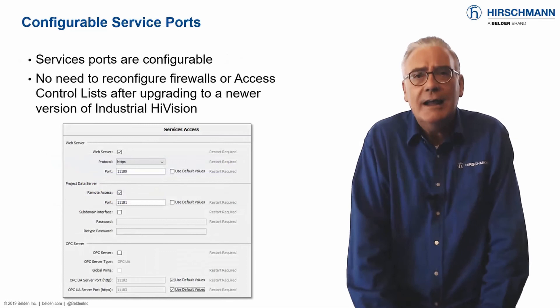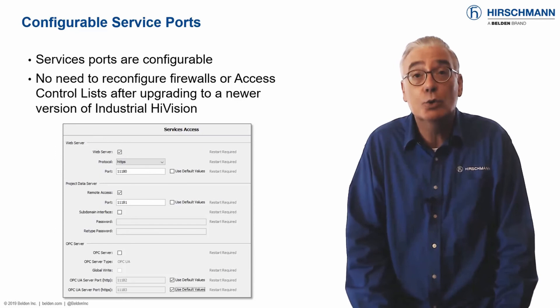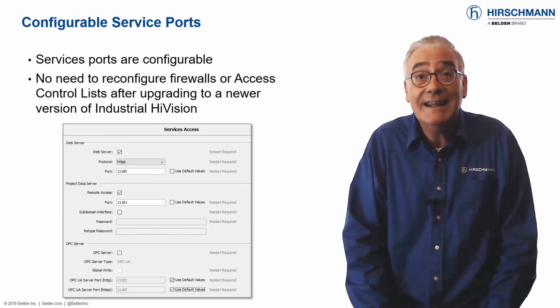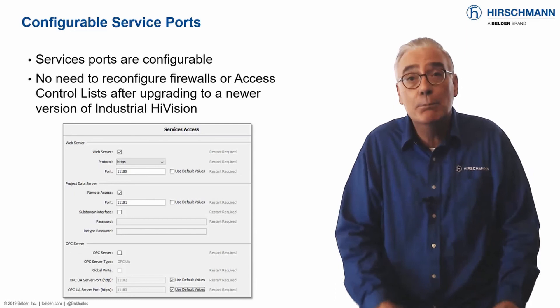Industrial HiVision uses a client-server architecture where the clients can be installed remotely. To enable communication, it's necessary to define TCP/IP ports per service. By default, each version of Industrial HiVision uses different ports.